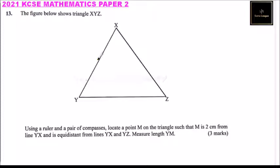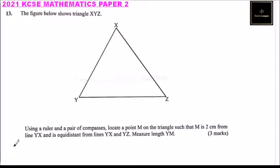So M is supposed to be 2 cm from this line. What we need here is a line that is parallel to XY or YX, and it is equal distance from lines YX and YZ. So we are supposed to locate the position of point M. We need to draw a line here that is parallel to YX, which is 2 cm.